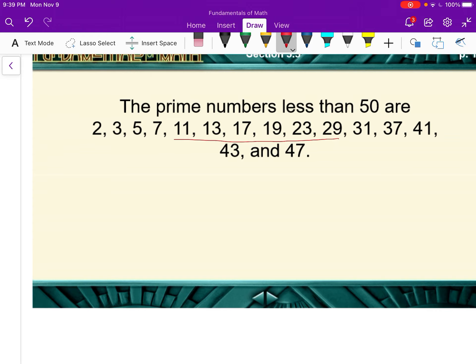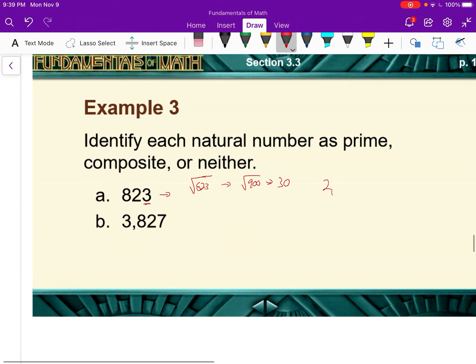So we're going to try all of these to see, unless we find one earlier, but we can try those. So we're going to try 2, 3, 5, 7, 11, 13, 17, 19, 23, and 29.